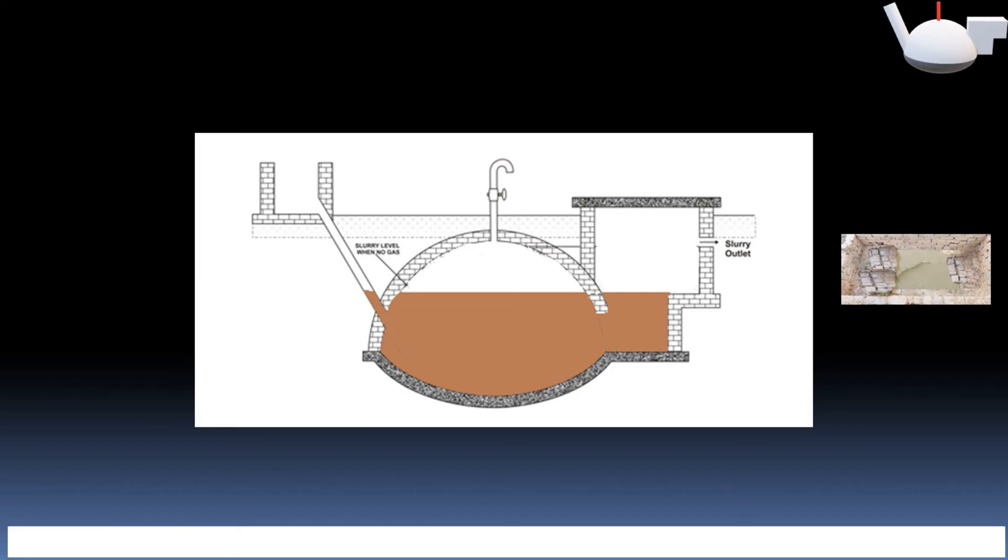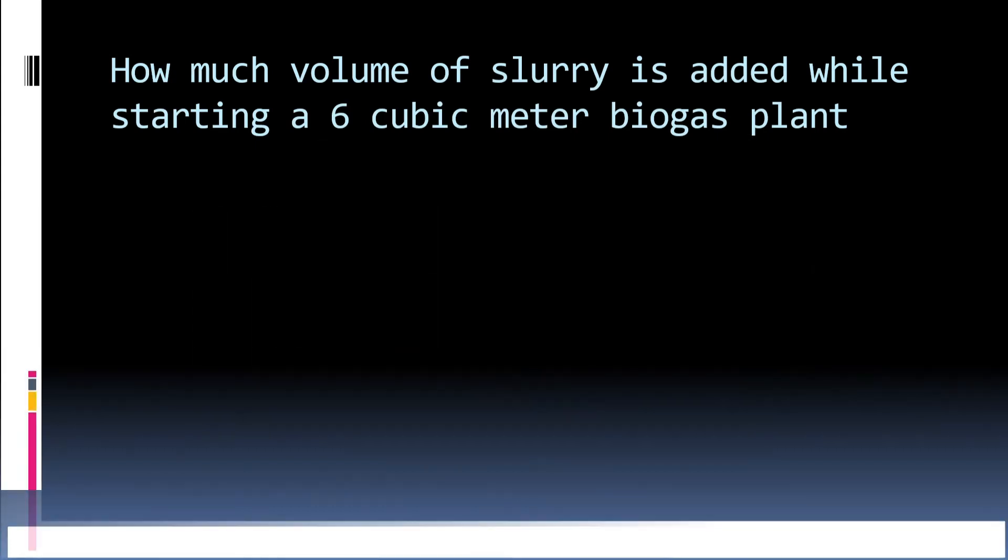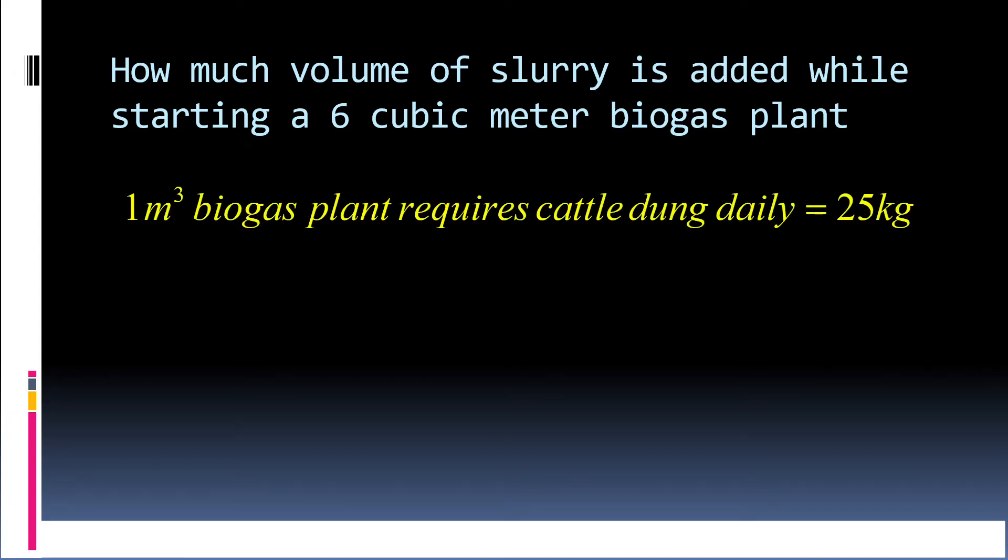You can watch the detailed video of retention time shown in the upper right corner as well as in the description. Let us study an example to calculate volume of slurry added daily in 6 cubic meter biogas plant. 1 cubic meter biogas plant requires cattle dung equal to 25 kg. How do we know this? This is done by conducting experiments and theoretically also you can calculate but that is beyond the scope of this video.